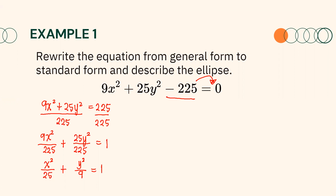Therefore, the standard form of the equation is x squared over 25 plus y squared over 9 equals 1. The higher denominator, which is 25, will become our a squared, and the lower one will be our b squared. Hence, we will have a squared equals 25 and b squared equals 9. Since a squared is the denominator of x squared, the orientation of the ellipse is horizontal.